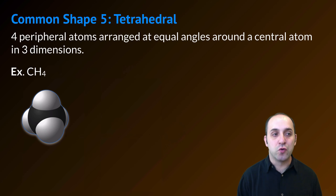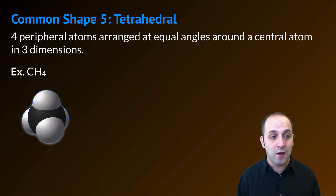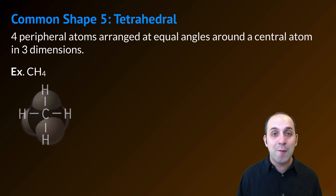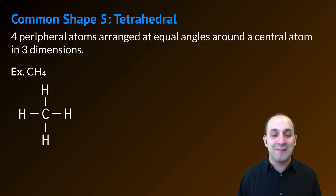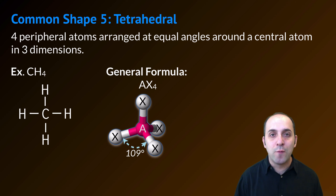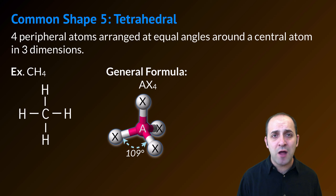Our last common shape is the tetrahedral shape — any time we have four atoms arranged at equal angles around a central atom. This is going to be a three-dimensional arrangement, even though we're always going to represent it like we do when we draw methane. This is methane's space-filling diagram. You can see that the atoms are clearly arranged in three dimensions, but when we represent it in two dimensions, you lose that clarity. Tetrahedral molecules will always have the general formula AX4, and the bond angle between any two adjacent bonded atoms is going to be 109 degrees.